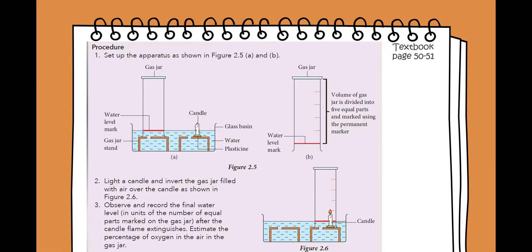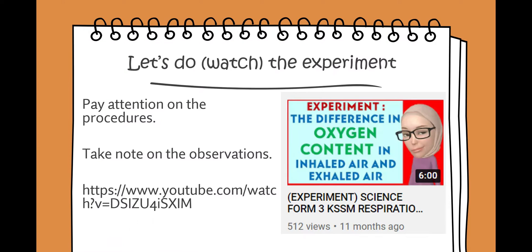Instead of using one glass basin, I'll use two glass basins. What you need to do is observe and record the final water level after the candle flame extinguishes, then we need to estimate the percentage of oxygen in the air in the gas jar. Now let's watch the demonstrations. Make sure you pay attention to the procedures and don't forget to take notes on the observations.